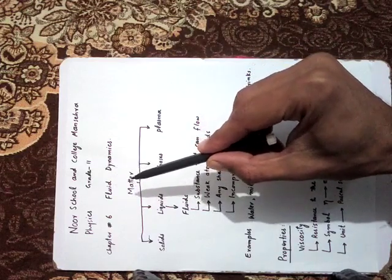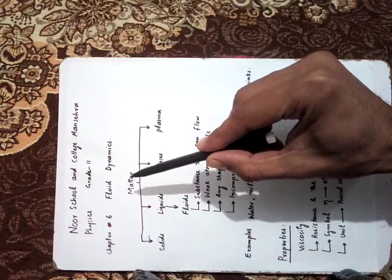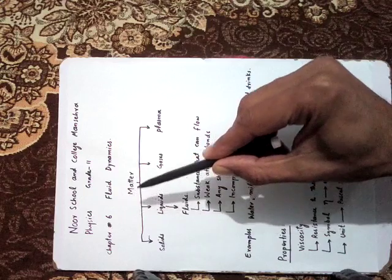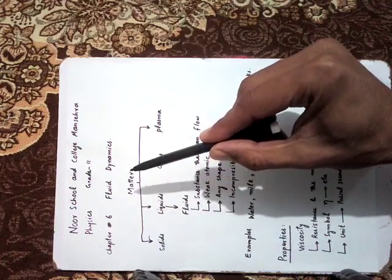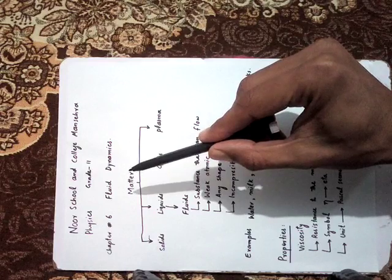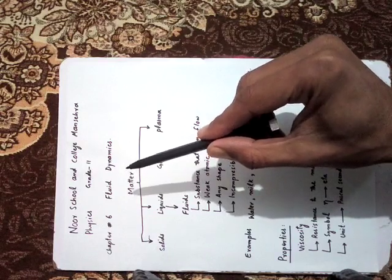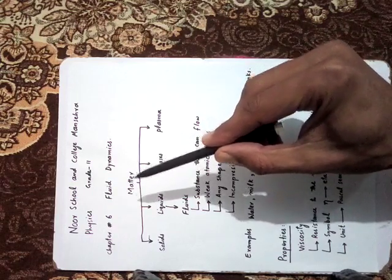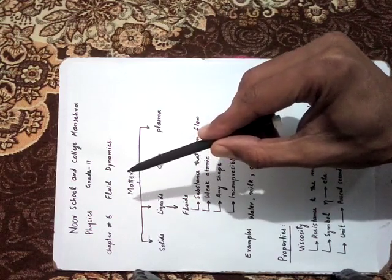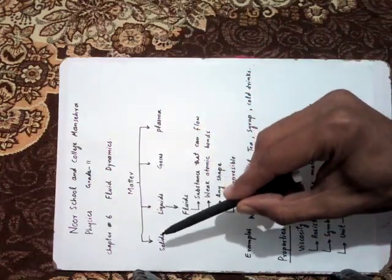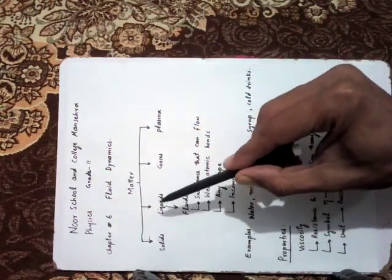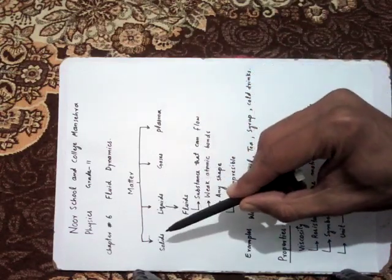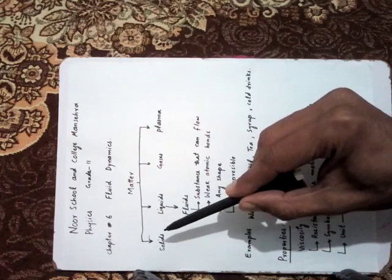On a very quick note, let us first consider what is matter. Matter is a substance that has some shape, weight, density, and it occupies some space. We know that there are four states of matter: solids, liquids, gases, and plasma.